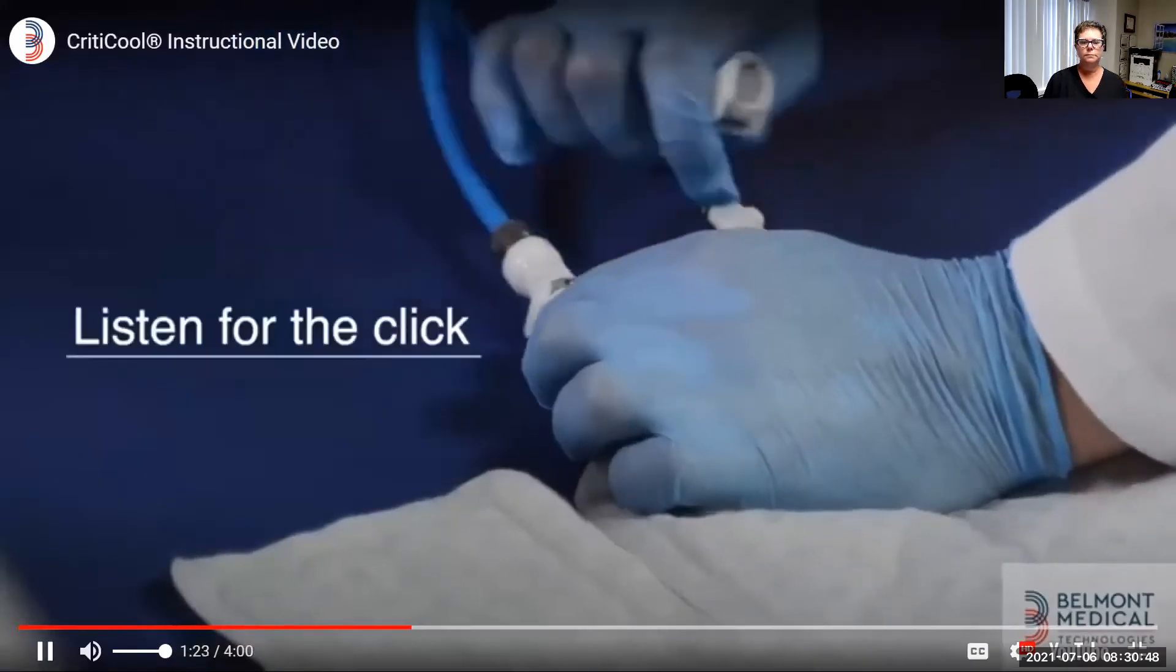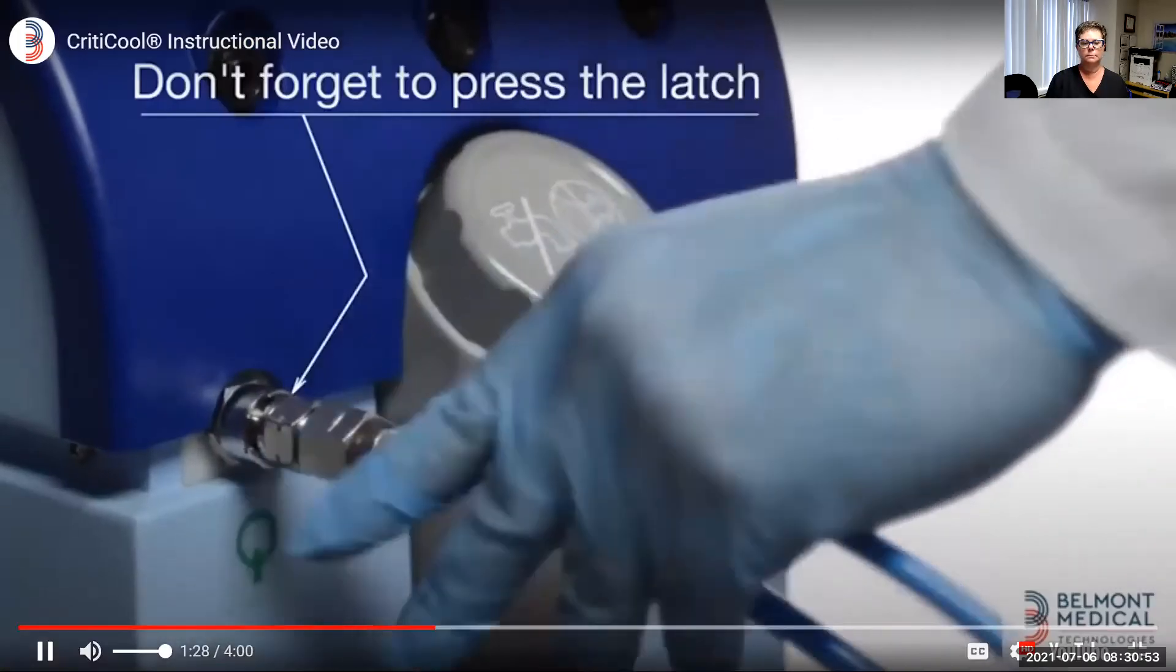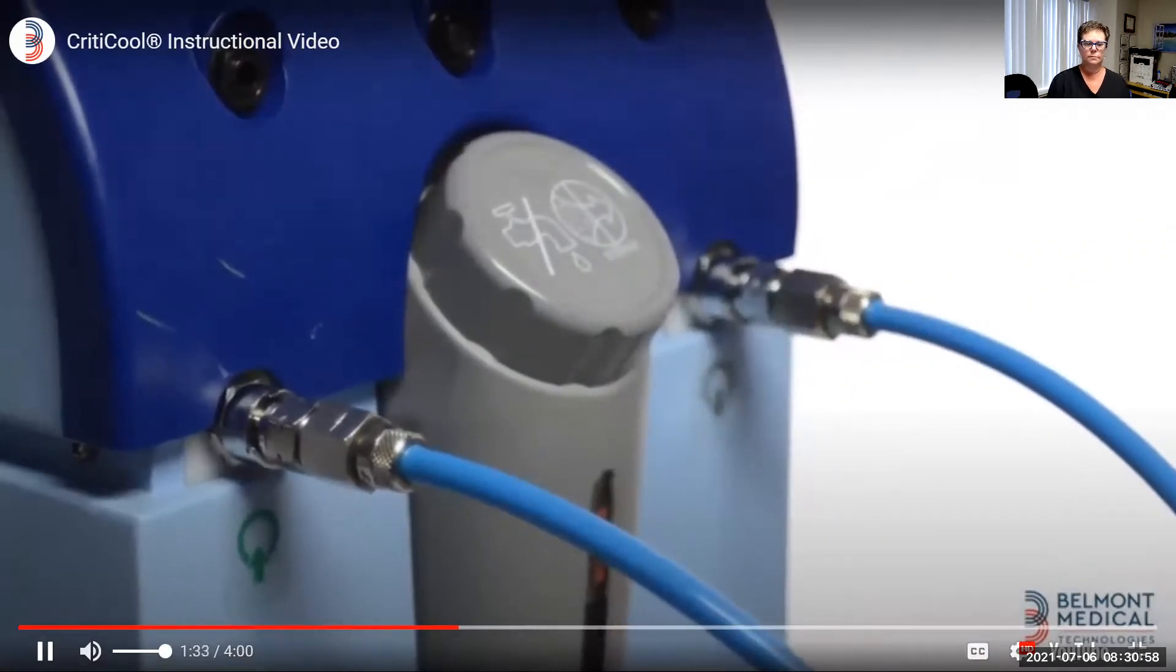Connect the hoses to the wrap and to the CritiCool system as shown. When connecting the hoses to the system, be sure to press the latch on each hose as you insert it. Either hose can be inserted into either side.